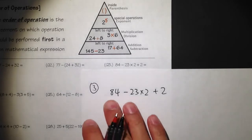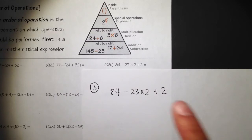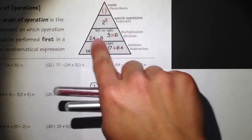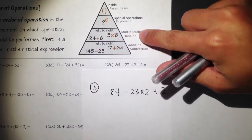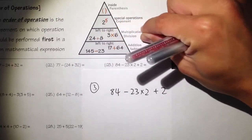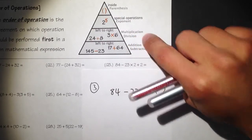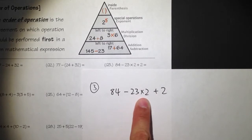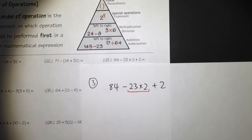If we pay attention to this question, we should identify what operations we have first. We have subtraction, multiplication, and addition. According to the pyramid, you can see that multiplication is above the level of addition or subtraction — so we are going to do the multiplication first. We have to carry out 23 times 2 first; we need to work that out first.